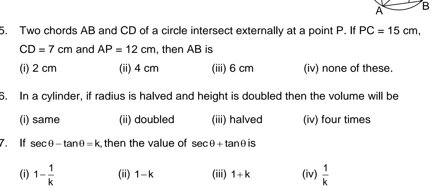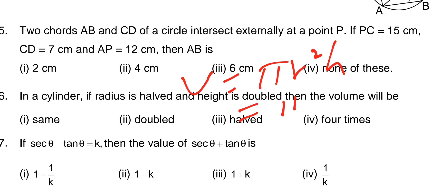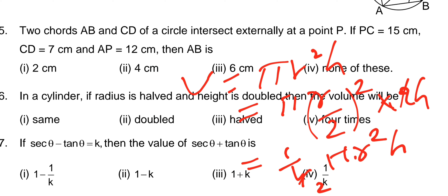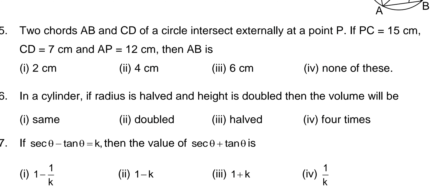In a cylinder, if the radius is halved and height is doubled, what happens to the volume? The cylinder volume formula is πr²h. With new radius r/2 and height 2h: π(r/2)² × 2h = π × (r²/4) × 2h = (1/2)πr²h. So the volume becomes half.